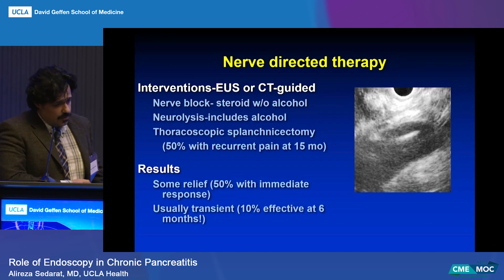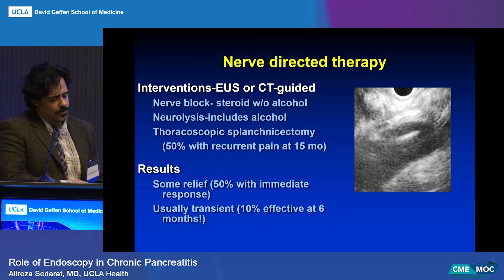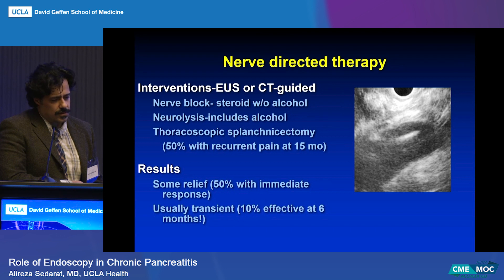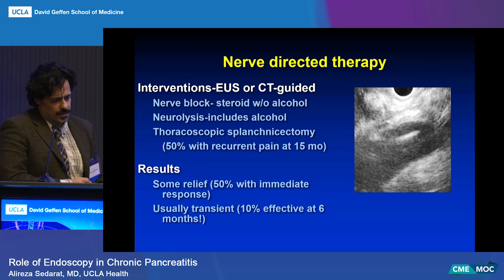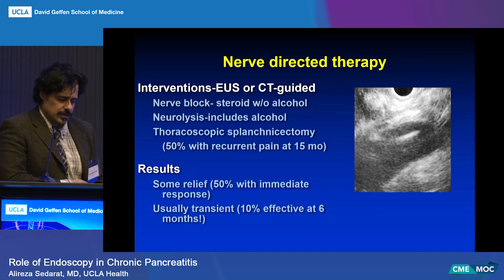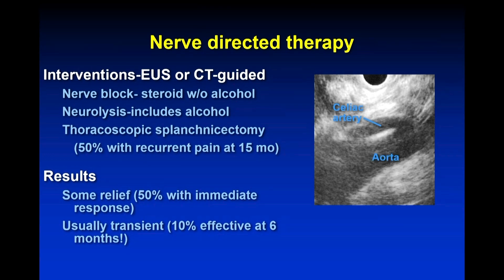EUS-guided, CT-guided, or fluoroscopy-guided celiac nerve interventions are another option. To me, it's primarily a cancer pain intervention and a very effective one in that situation. When used for benign disease, it's a little bit wild west. Some folks get enough relief to get them out of the hospital, but recurrence is fairly high. I personally avoid neurolysis for chronic pancreatitis and prefer to use blocks with steroids and anesthetic. That's the aorta, that's the celiac artery, and you just point and shoot your injectate right there.